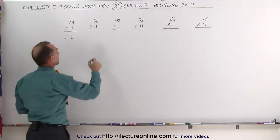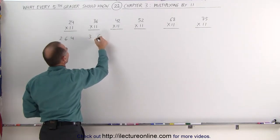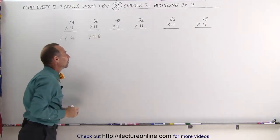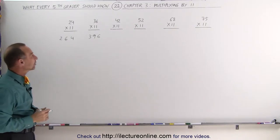Try with 36. Again, you separate the two numbers, 3 and 6, add them together, that gives you 9. 11 times 36 is 396.